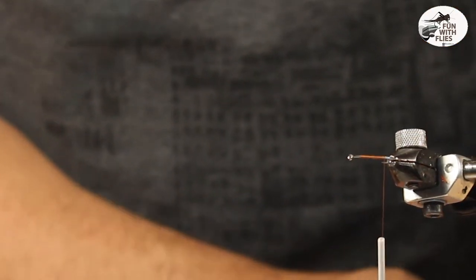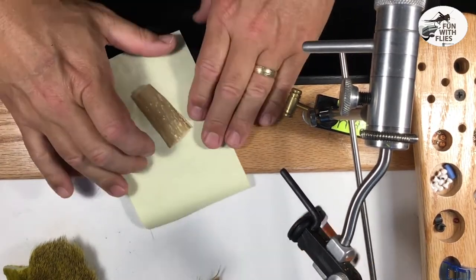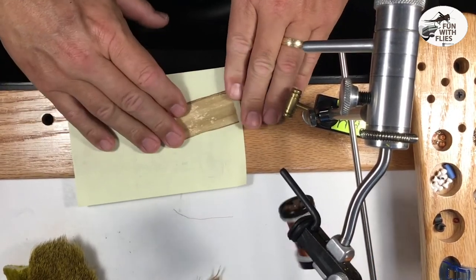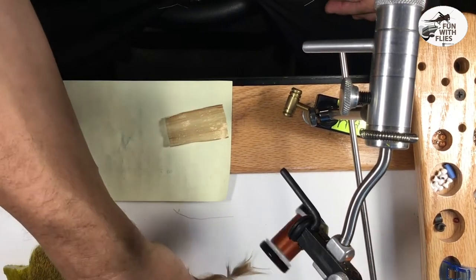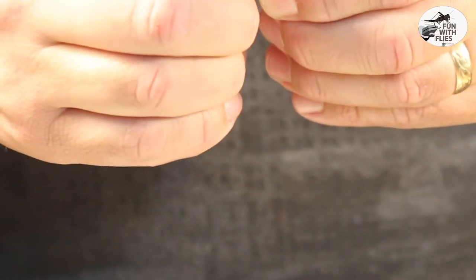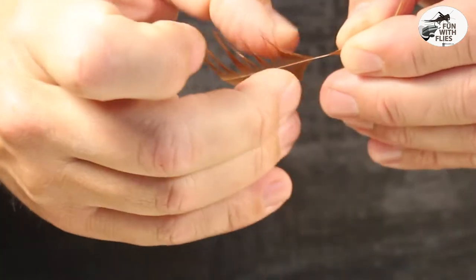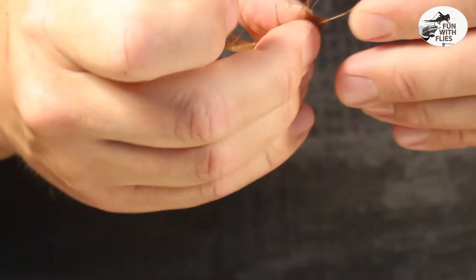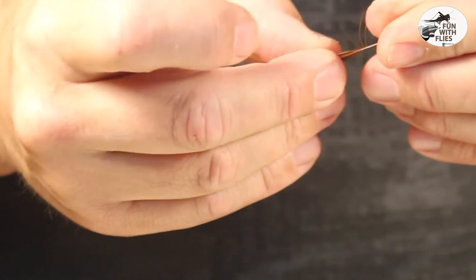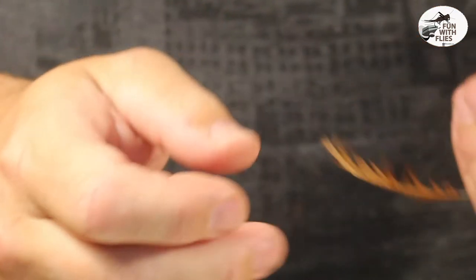Now to make the wing, I'm going to take a nice piece of Swiss straw. Get it down nice and flat. I'm going to take a piece of brown hackle and I'm going to prep it like I'm tying it in. So, I'm going to pull some of these hairs off so it's nice and even. So I'm doing this, trying to get it like that right there.